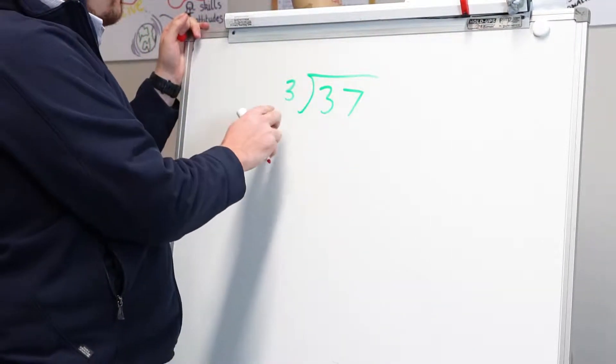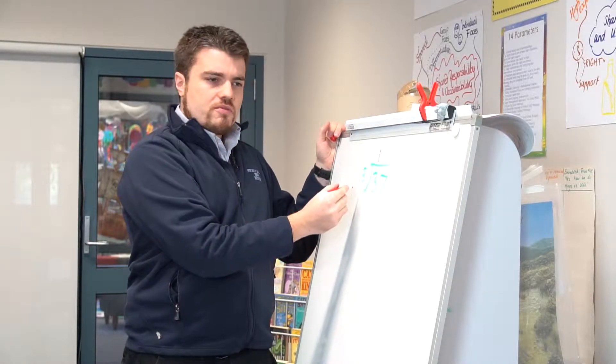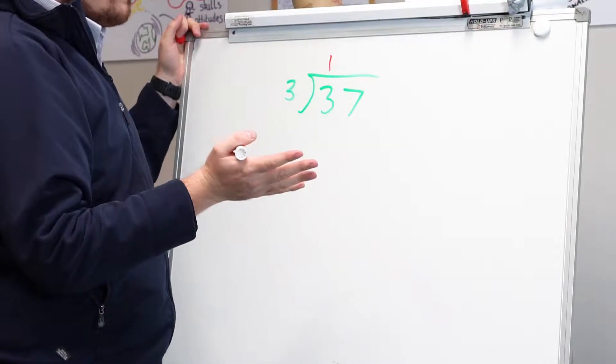So the first thing, same as before, how many times does three go into three? It goes in once. How many times does three go into seven? This is where people might get caught up.